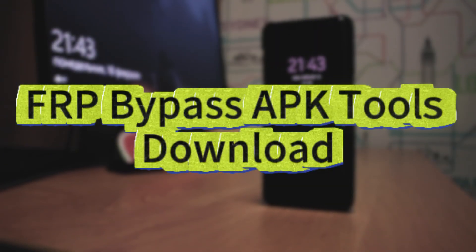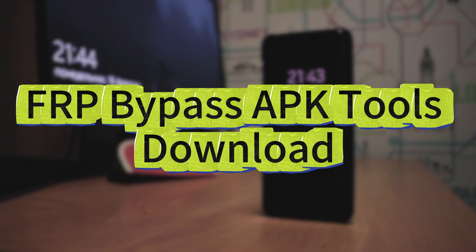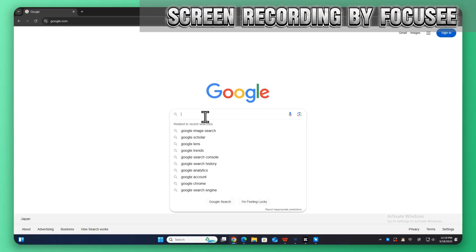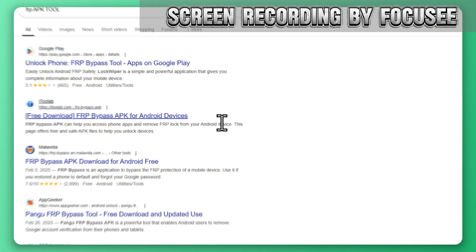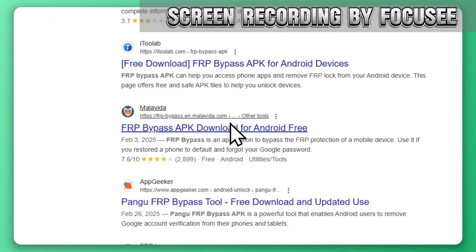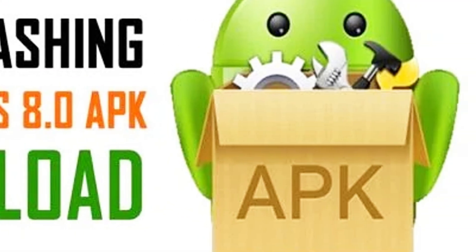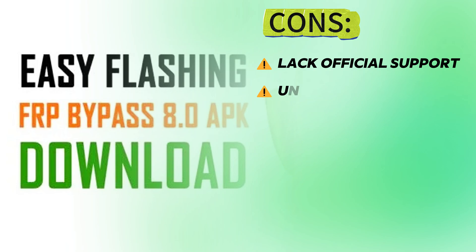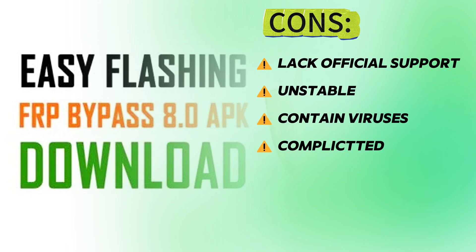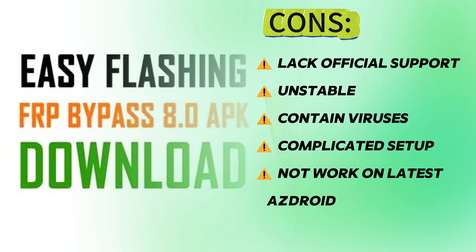FRP bypass APK tools are another option to bypass Google verification without a password or PC. However, most APK tools are unstable, lack official support, and may carry malware or viruses. Compared to professional FRP software like DroidKit, APK methods are more complicated and may not work with newer Android systems.